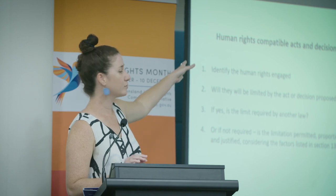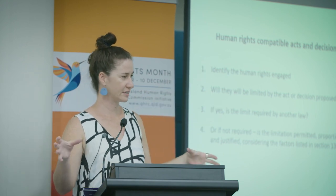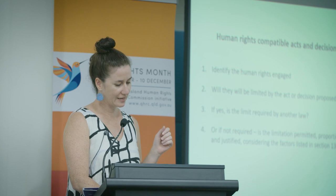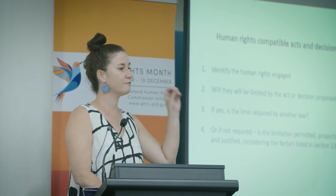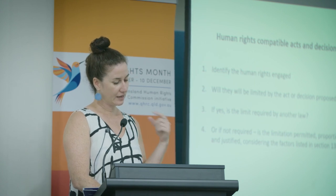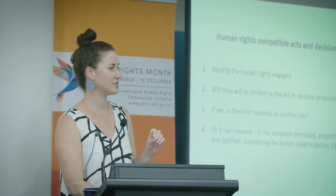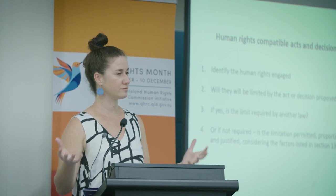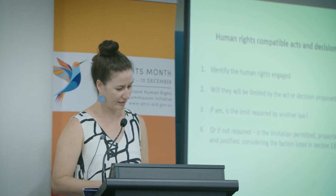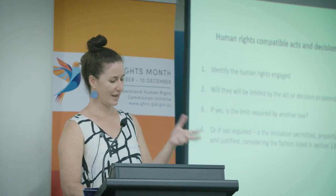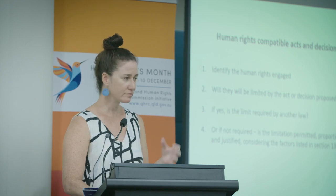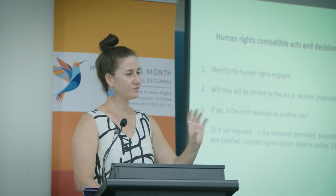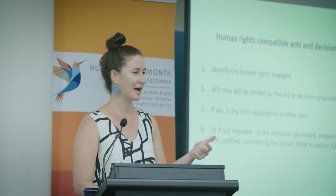So, human rights compatible acts and decisions — this is the substantive portion of Section 58. A decision maker must understand in general terms human rights protections and give serious and proper thought to the impact of the decision before they make it. They need to consider and balance competing interests and obligations. The Human Rights Act is a piece of law designed to introduce concepts of proportionality and balance. It is then necessary to identify exactly how the proposed action will affect those rights. I think of Section 58 as flipping around the usual thinking when determining how to act in any given situation.